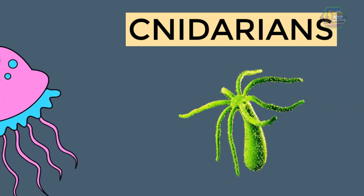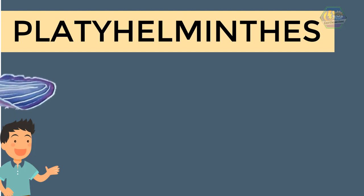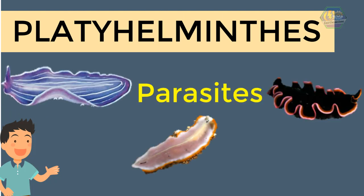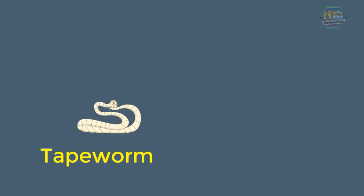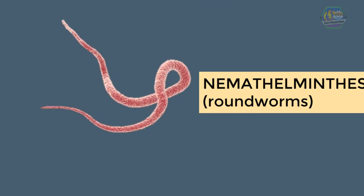Next are the cnidarians — some examples are the hydra and jellyfish. Next is Platyhelminthes, or flatworms. What's nasty about them is that most are parasites, meaning they live inside another animal and eat what's inside them. Some examples are tapeworms and liver fluke.